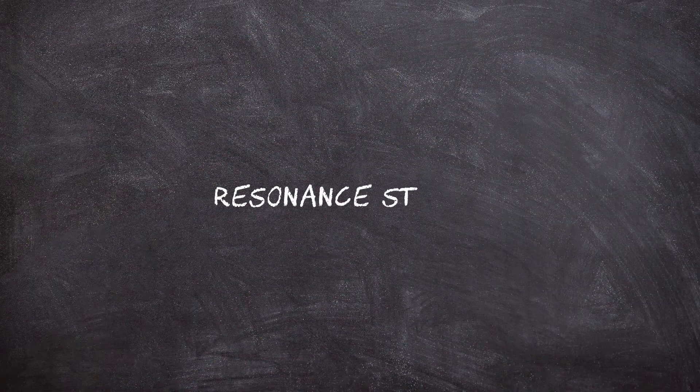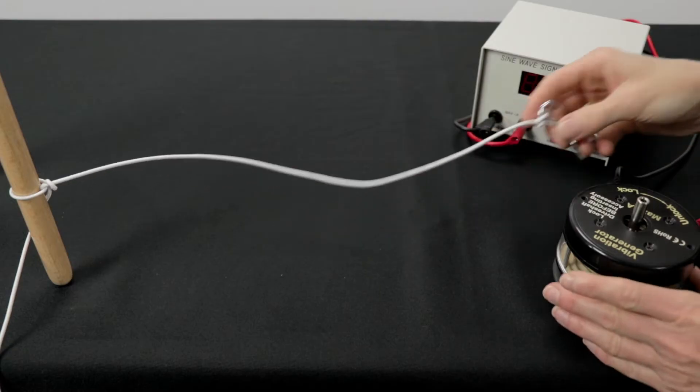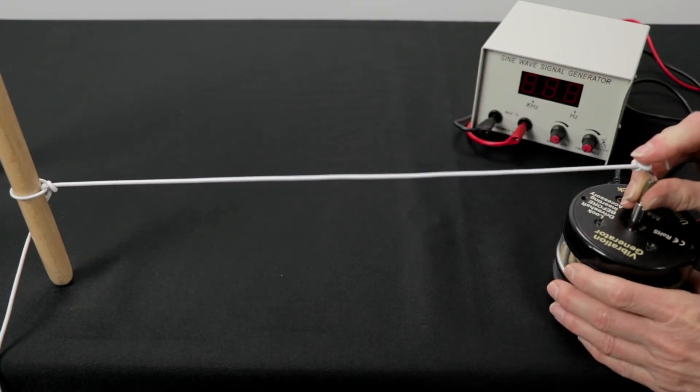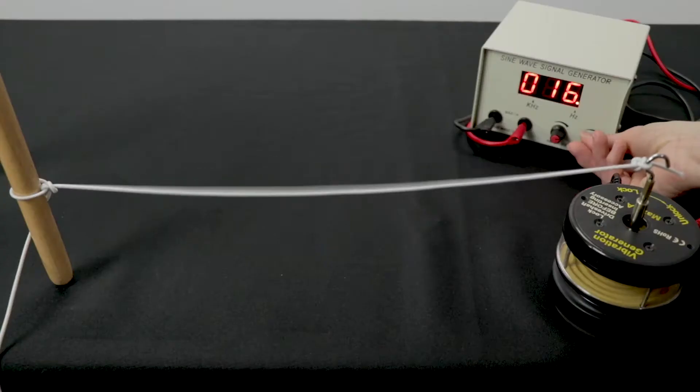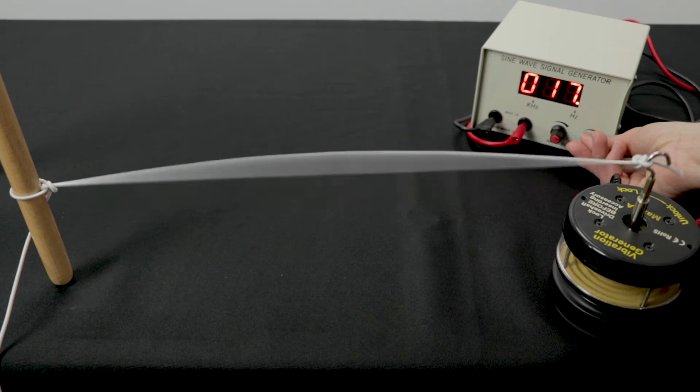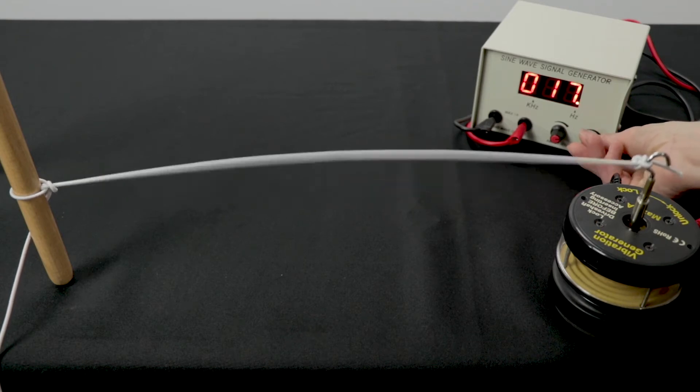Now that we understand waves a bit better, we're going to begin our experiment by demonstrating standing waves first. To visualize standing waves, attach a string to the wave driver on one end and the other end to a stationary object. Now turn on the wave generator. At first, you'll notice the string is moving, but there's no evidence of any constructive or destructive interference and the string just sort of bobs around.